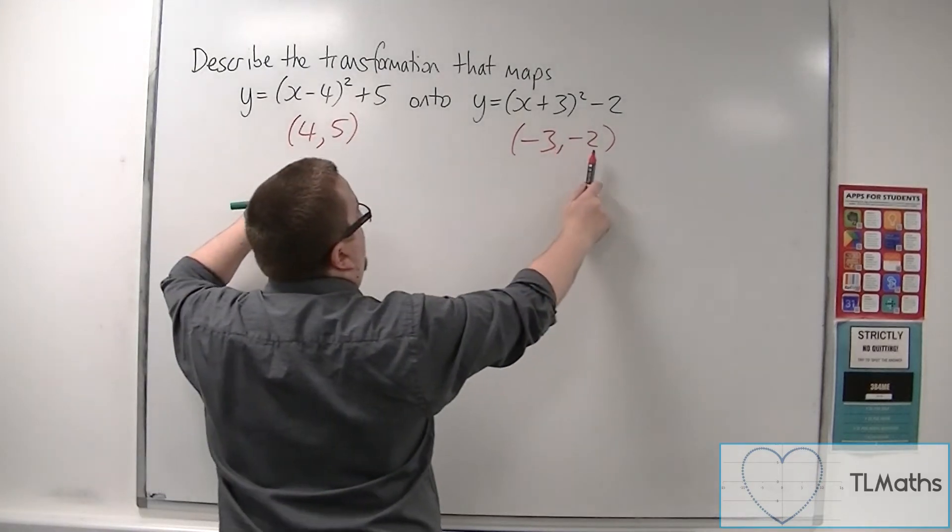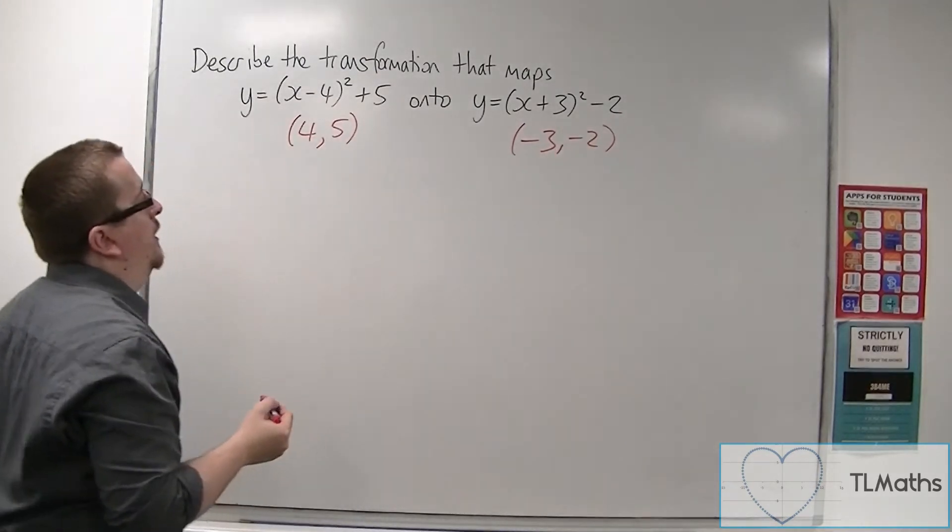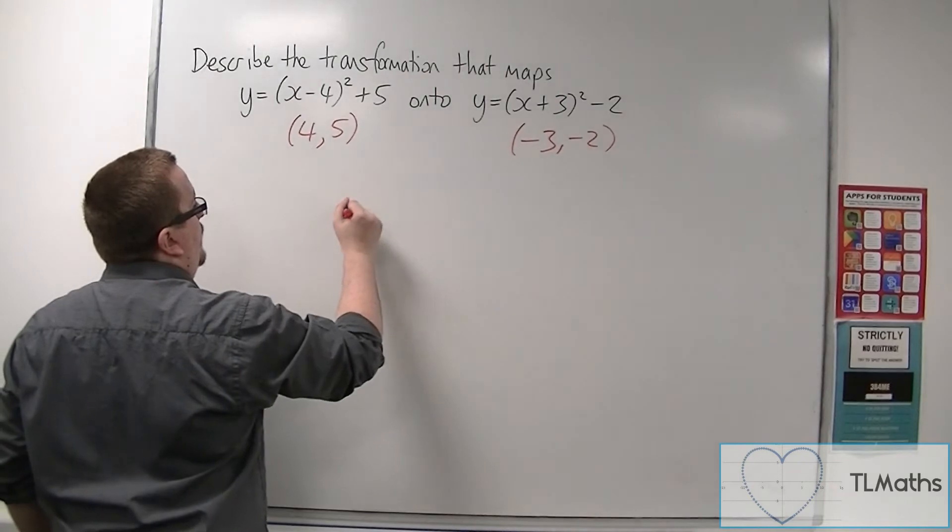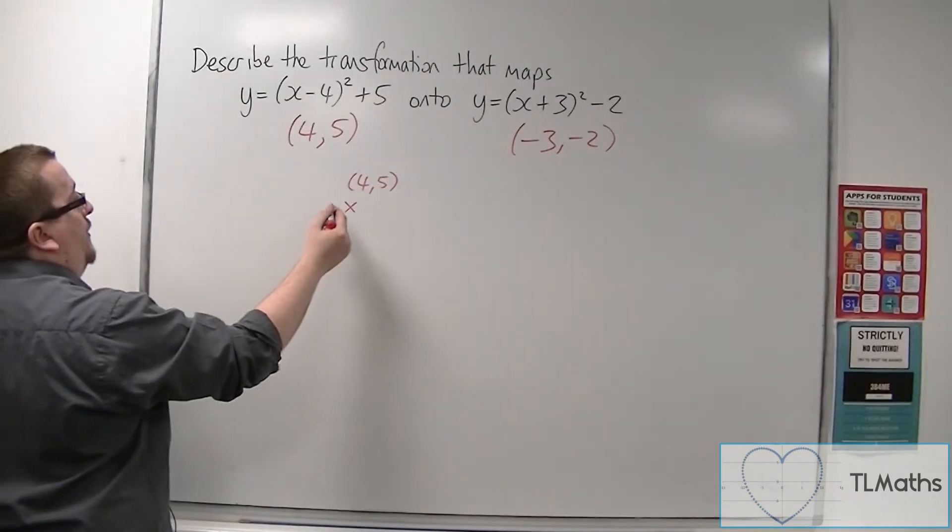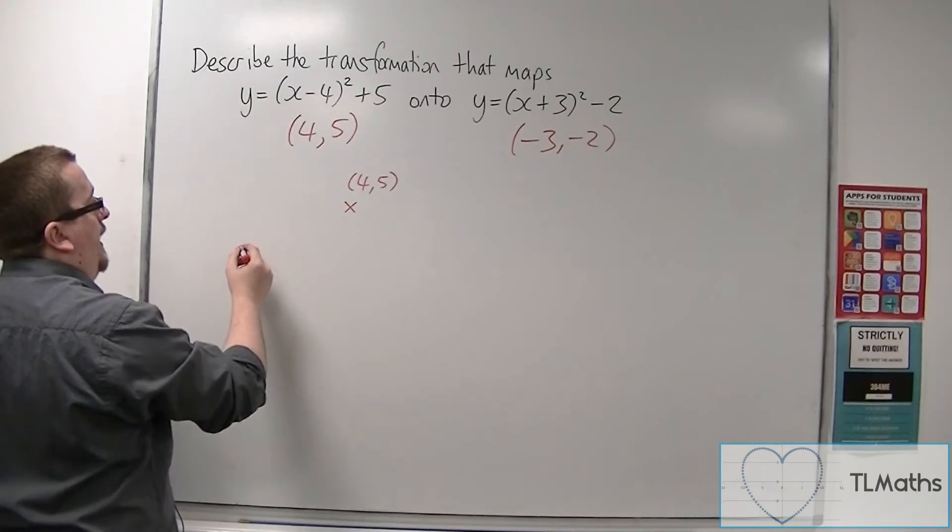So if you imagine this, this is the coordinates of 4, 5. And minus 3, minus 2 is further back and further down.